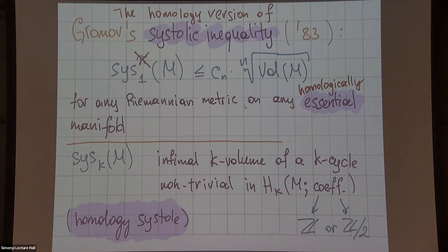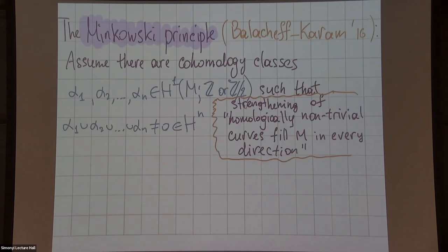Here is a strengthening of the previous result. I'm making my assumptions stronger and then the result is stronger as well. If I replace the homology essential assumption: assume there are homology classes, first homology classes, n of them, such that their cup product is non-zero in the top homology of my n-dimensional manifold. This implies the homology essential assumption from the previous slide.